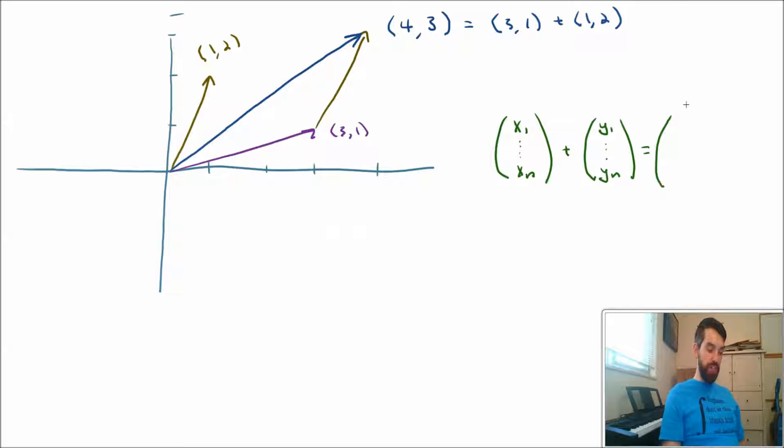And my notion of addition is to add it so-called component-wise, that the first component becomes the sum of the other two first components, and then the final component becomes the sum of the other two final components. And that this is going to be a definition, algebraically, of vector addition.